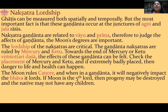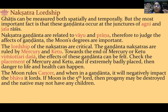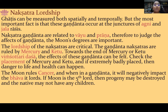Nakshatra gandantas are related to Vayu and Prana. The rashi junctions we discussed — Meena-Mesha, Karka-Simha, Vrishchika-Dhanu — are the Agni and Jala rashis. But nakshatra gandanta, when we talk about Mercury nakshatras placed in these rashi Gandantas, we are directly talking about Vayu and Prana — and thus longevity and health itself. When we say longevity is threatened, it doesn't mean death every time, but death-like suffering — experiences which are death-like.